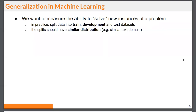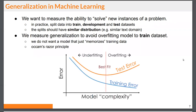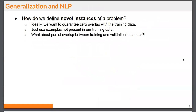On the topic of generalization, we know the term from machine learning. When training or evaluating a model, we split the available data into train, development, and test datasets, hopefully with similar distributions, to avoid biasing our evaluation. We don't want a model that memorizes the data — we want one that extracts interesting features or structure and can apply it to novel examples. In the context of NLP, how do we define novel examples?